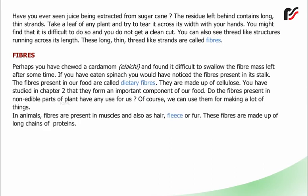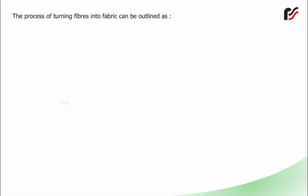In animals, fibers are present in muscles and also as hair, fleece or fur. These fibers are made up of long chains of proteins. The process of turning fibers into fabric can be outlined as: fiber to yarn.